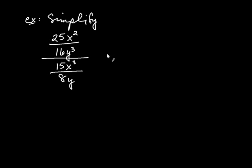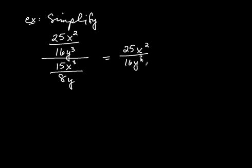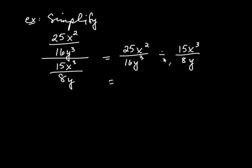So what we do is we flip and then multiply. What I mean by that is you just write this out — you'd say this fraction divided by this fraction — and we're going to write that out horizontally. So we write it as 25x squared over 16y cubed, divided by the second rational expression, 15x cubed over 8y. Then you change this to multiplication and take the reciprocal of the second expression — that's what I mean by flipping and then multiplying.